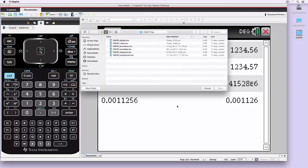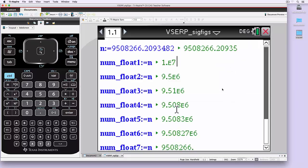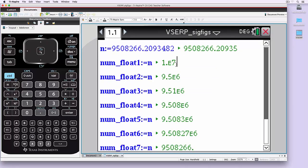Now let's see how different numbers, the same number can look when you use the different floating point settings. So here's a number.